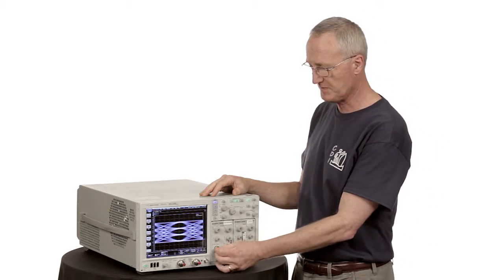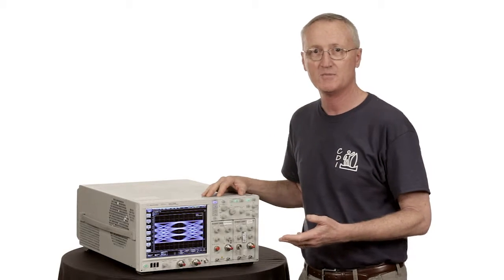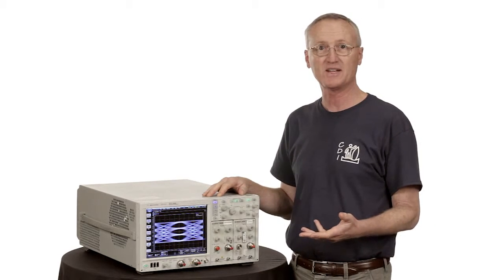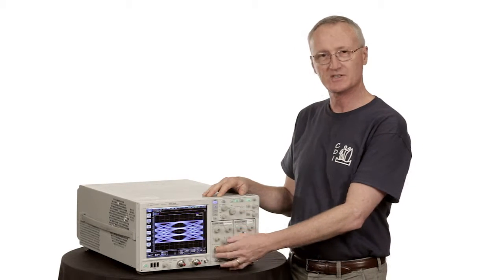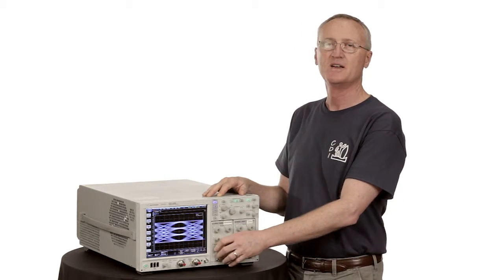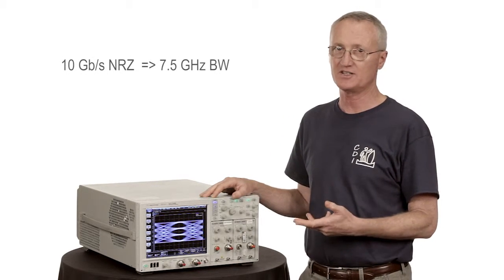In the optical space, they're also going to be doing PAM-4 modulation at 50 gigabit per second. But the way bandwidth is defined for optical measurements has historically been a little bit different. For example, if you had a 10 gigabit per second NRZ signal, the bandwidth of that was set by what's called a reference receiver, where the bandwidth is 75% of the data rate, 7.5 gigahertz.